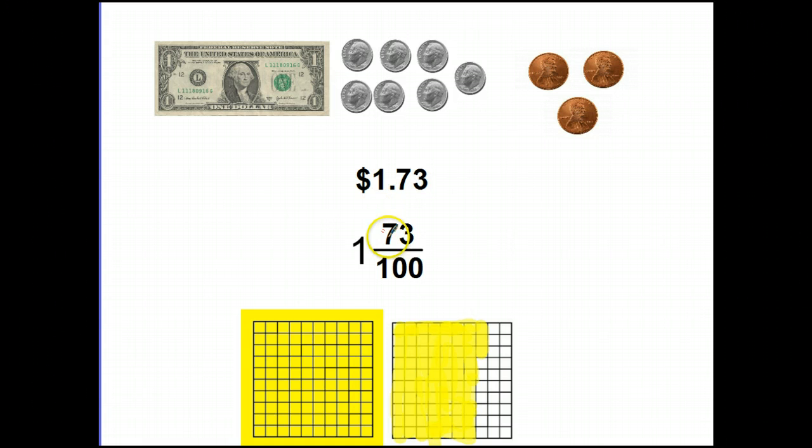We have one whole dollar, and seventy-three of the hundredths it would take to make a new one, which this fraction representation here says exactly that. We have one whole dollar, we have seventy-three cents of the hundred cents it takes to make a new one. Finally, I put some hundredths grids at the bottom of the screen, and you'll see that we have one grid that is entirely filled in because it's showing that there's one whole. And then when we come here to the second hundredths grid, you'll see that I've highlighted seventy-three of the hundredths. We have one whole and seventy-three out of the hundred parts it will take to make a new whole.